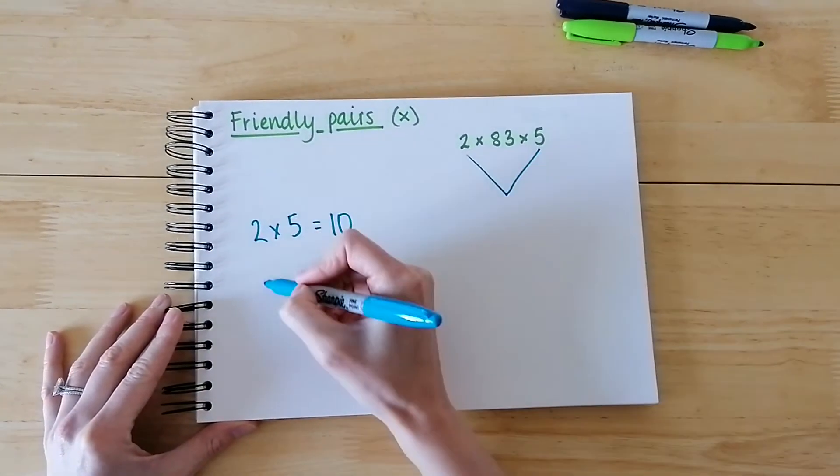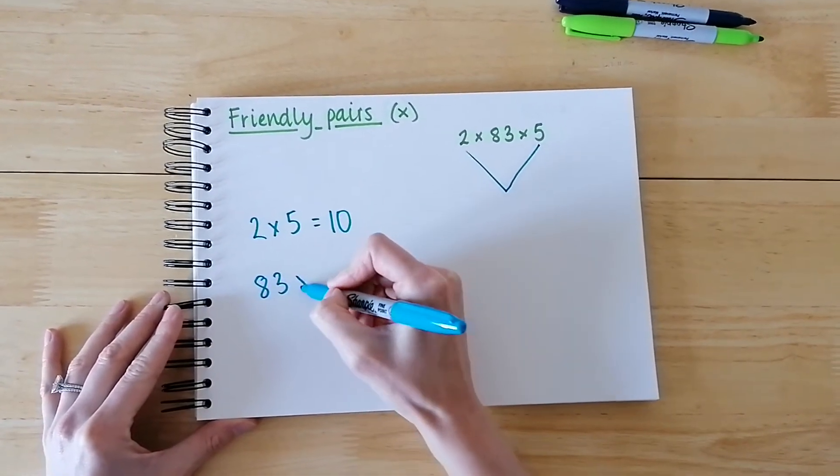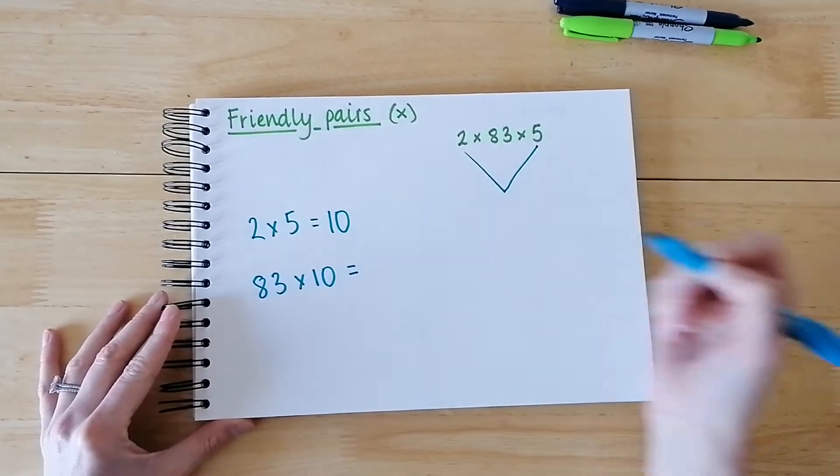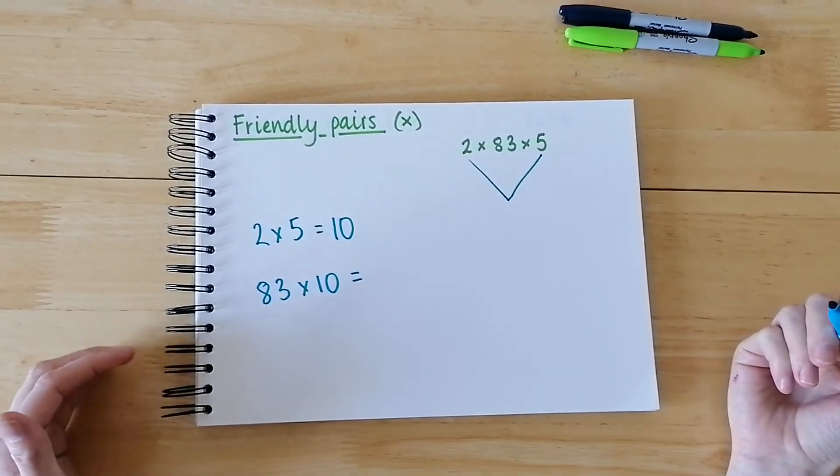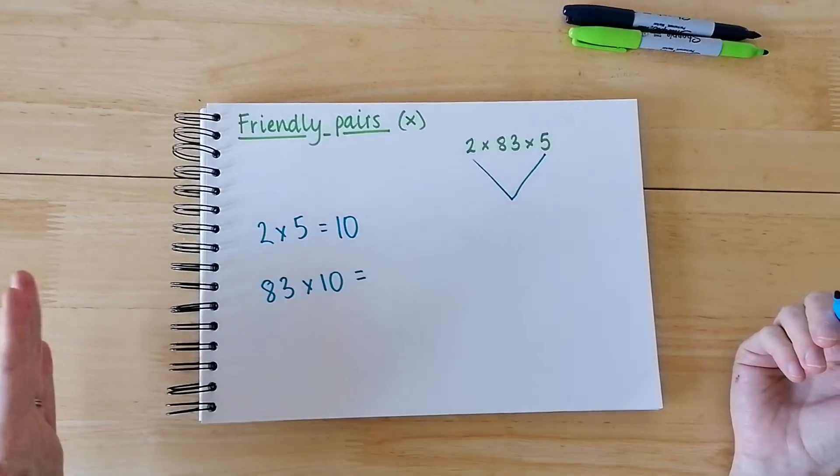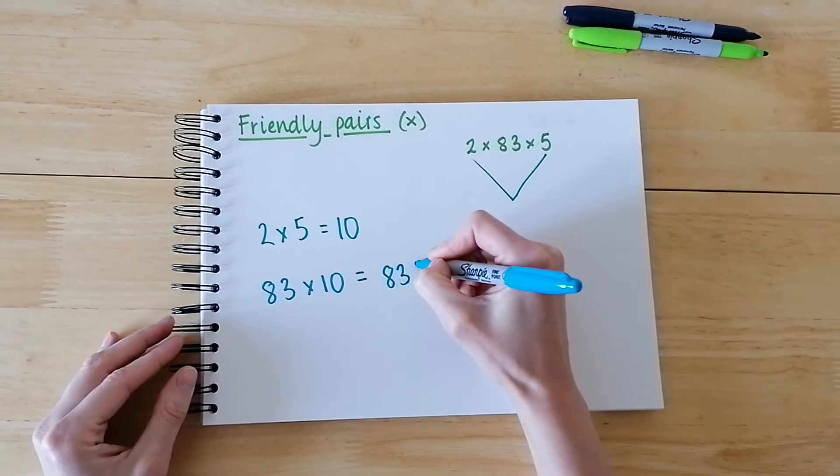That calculation then becomes 83 multiplied by 10. And we know when we multiply by 10, the place value shifts. So we know that we've got 830.